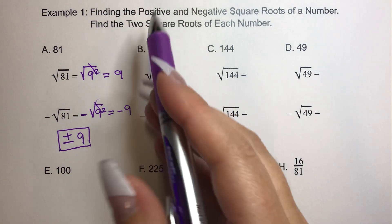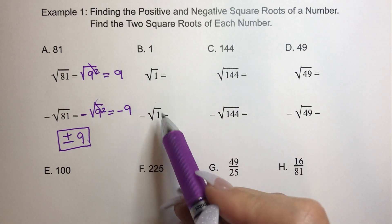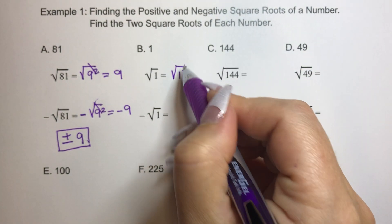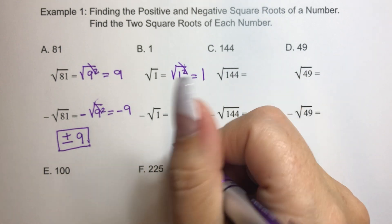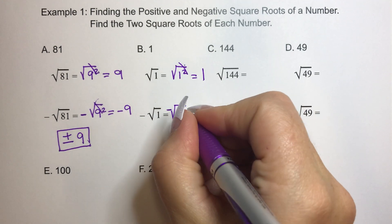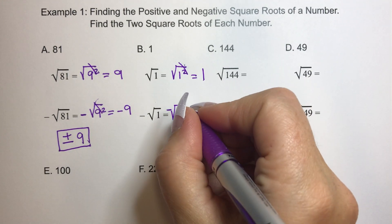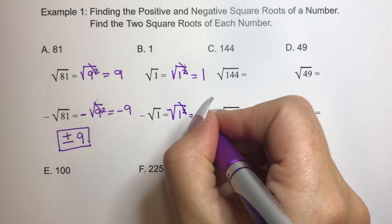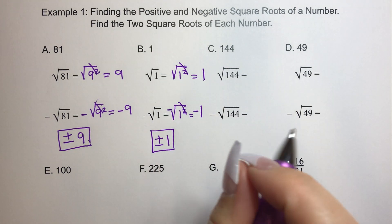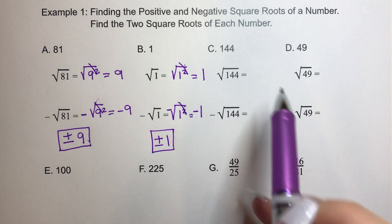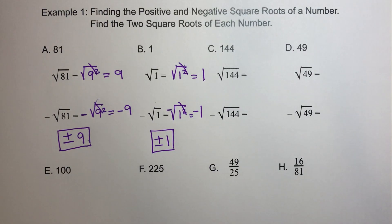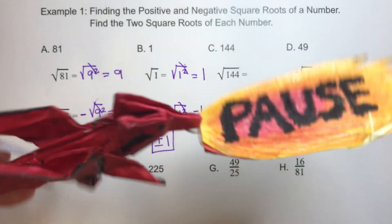Let's talk about 1. So this is the positive root and this is the negative root. We know that 1 is the same thing as 1 squared, so the square root and that square cancel each other out and we're left with positive 1. And then for the negative: 1 squared is the same thing as 1 because 1 times 1 is 1. The square root and the square cancel each other out and we're left with negative 1. So the two answers are plus and minus 1. Pause your device, go ahead and figure out C and D. When you get done, press play and we'll talk about them together.